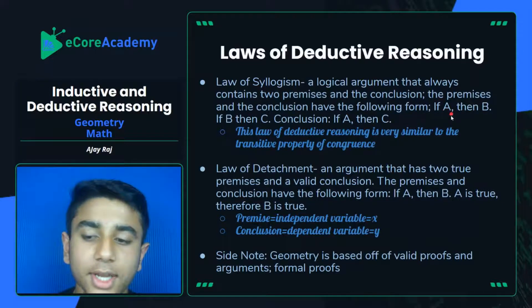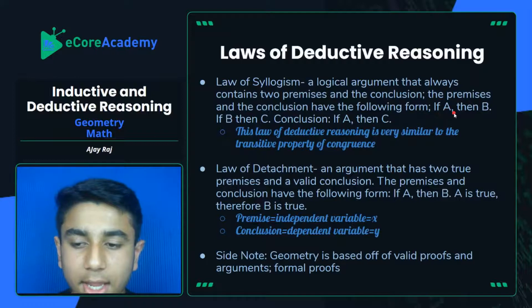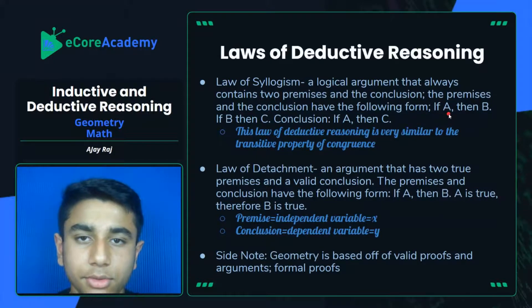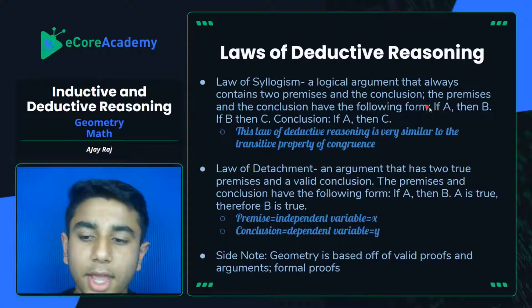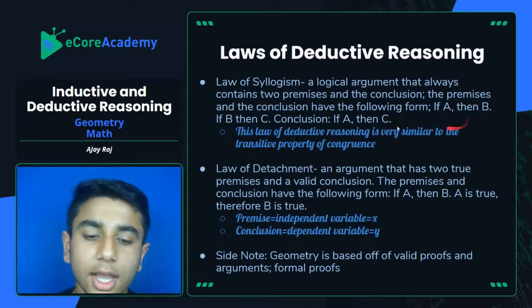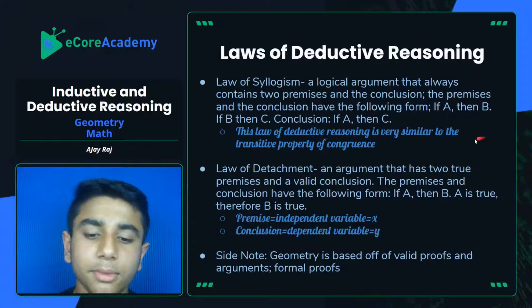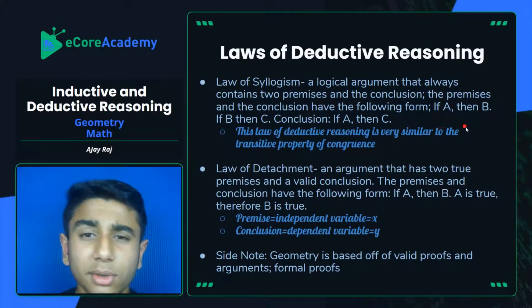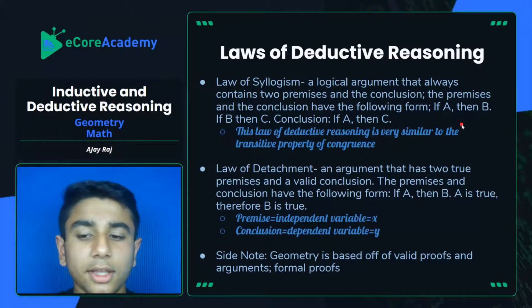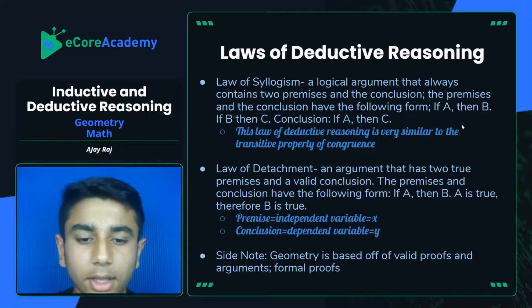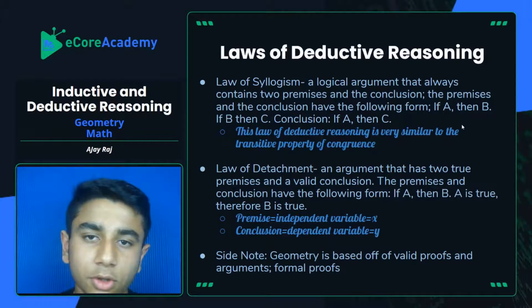Breaking that down: if you're given a statement A — which can be a value or a geometric relation — and if A causes or is equivalent to B, and if B is equivalent to C, then A must be equivalent to C. This law of deductive reasoning is very similar to the transitive property of congruence. Basically, if one value is equivalent to another value B, and C is equivalent to that same value, then those two values equivalent to the same value must also be equivalent to each other.